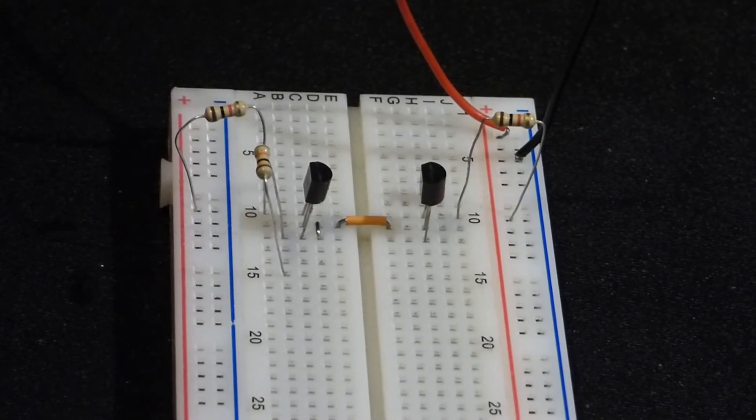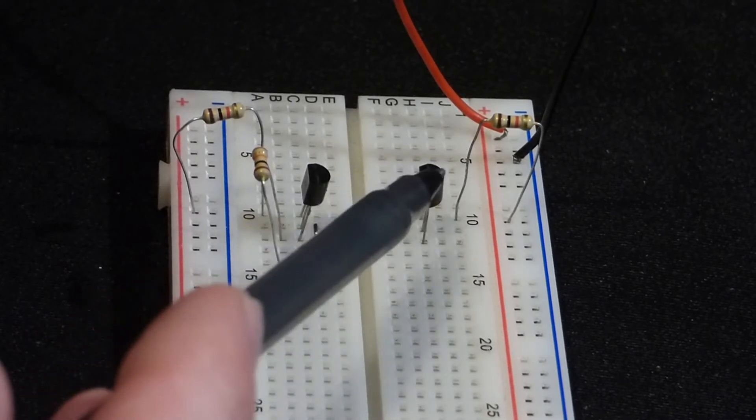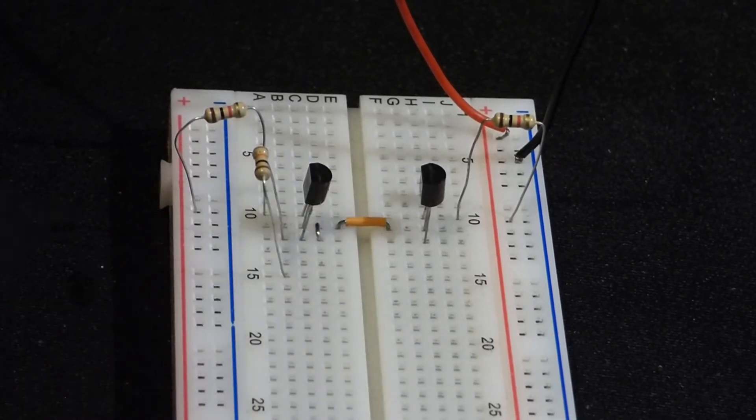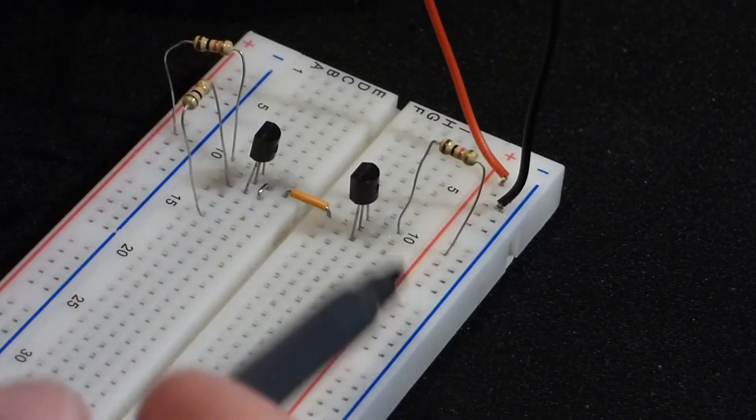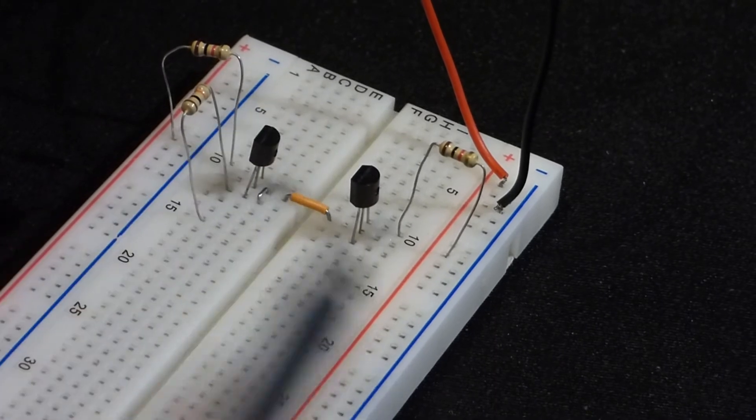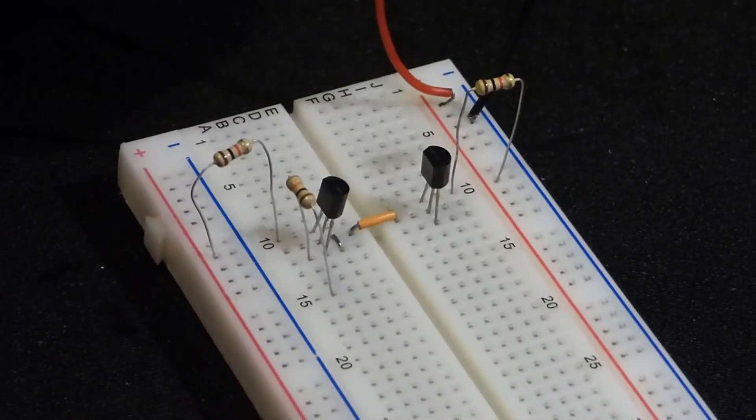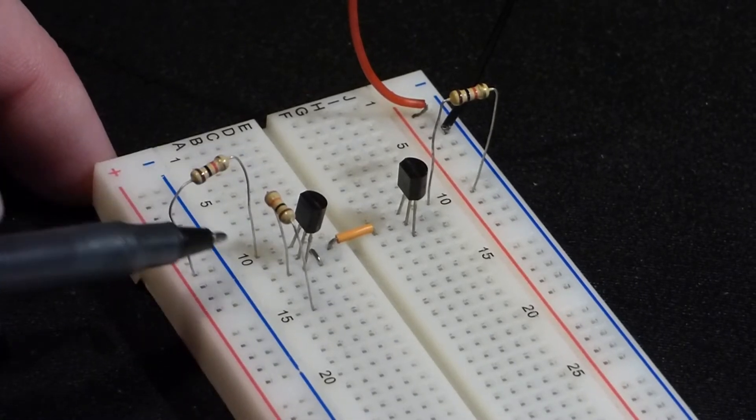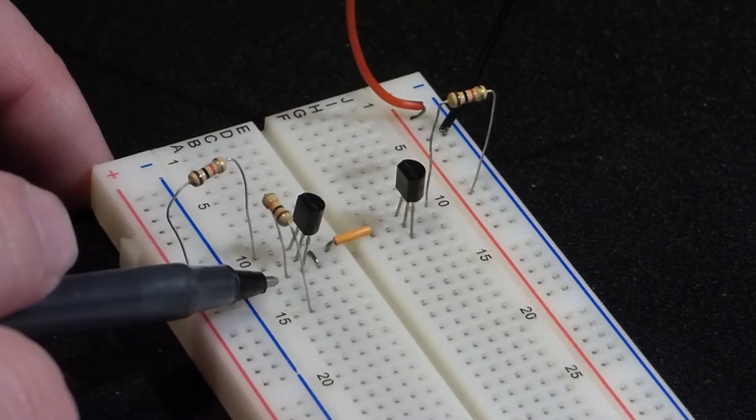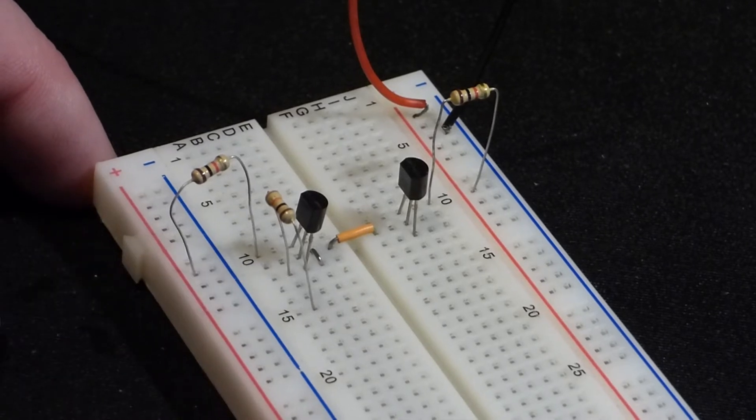So now here's an interesting circuit called a current mirror. These are both PNP type transistors 2N3906. Looking at the flat edge to the left, the emitter is on top, base in the middle, and collector at the bottom.